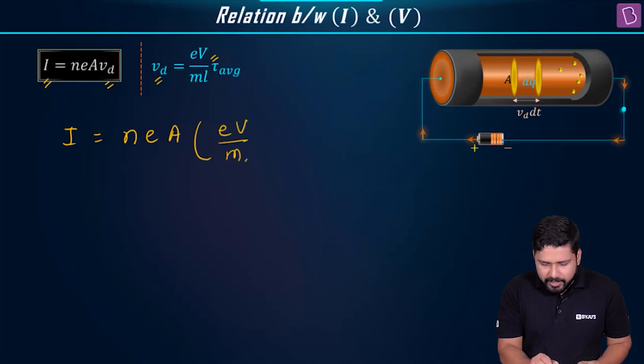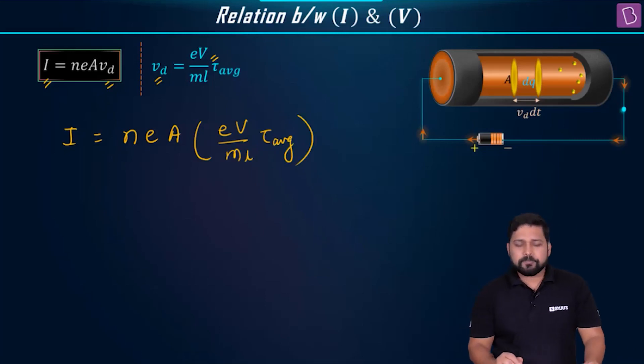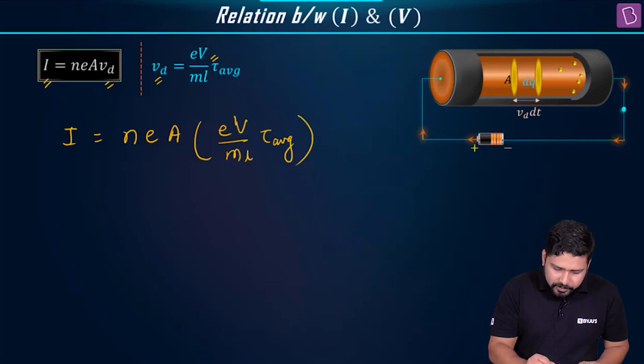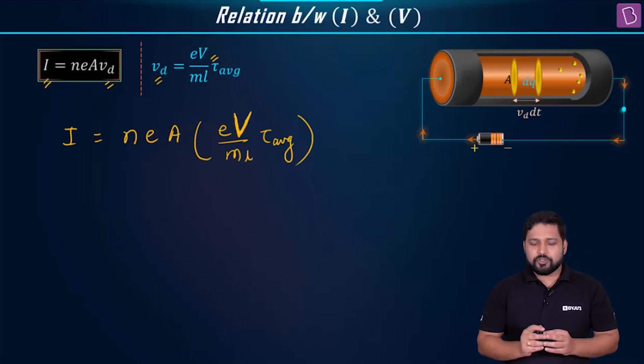We'll get E V by M L times tau average. Let me just write V properly so that you understand and you don't get confused with the drift velocity and the potential.